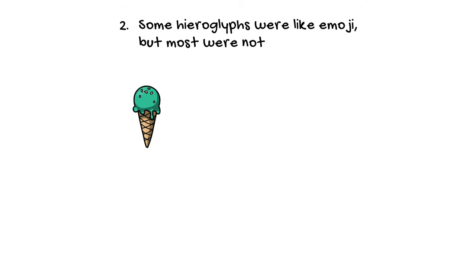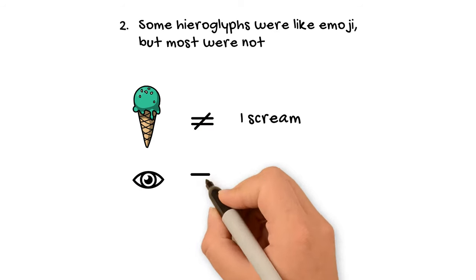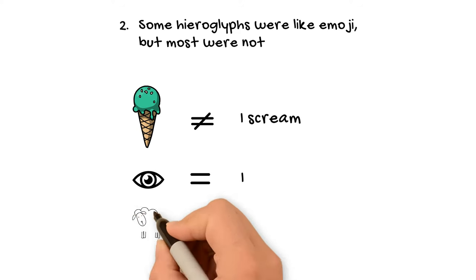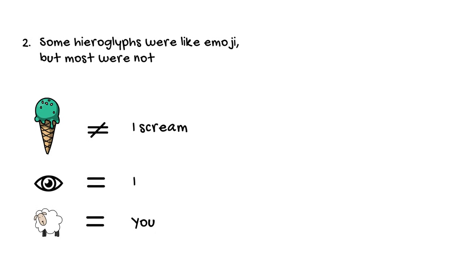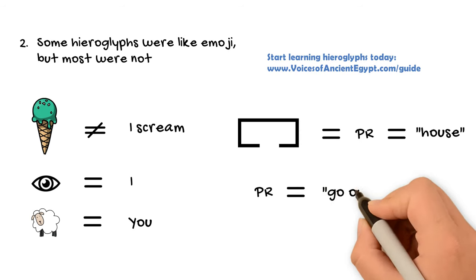So as I already pointed out, hieroglyphs generally did not work like the heart example above or the ice cream example. Instead, they worked like the eye and the female sheep or you that I showed you. So let's see an example in actual Egyptian hieroglyphs. This hieroglyph, which is a basic plan drawing for a house, represents the sounds of the letters P and R, which spell out the word for house. So this hieroglyph can actually be used to write the word for house, which is what it pictures also. But it's also very often used for the sounds, the P and the R. So for example, the Egyptian word for to go out is spelled with a P and an R. And so they use this house hieroglyph to spell the word to go out.